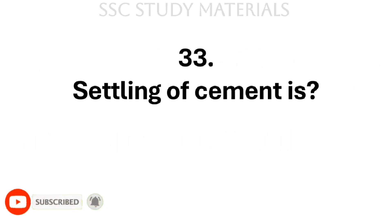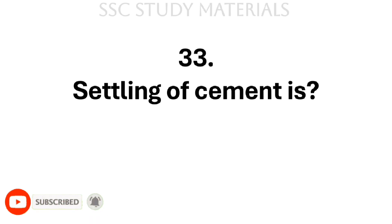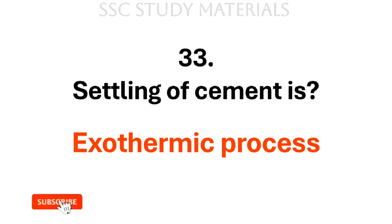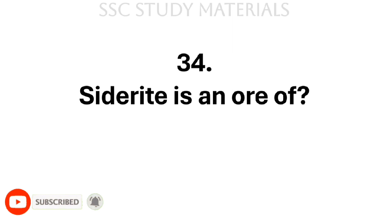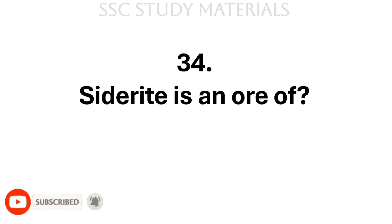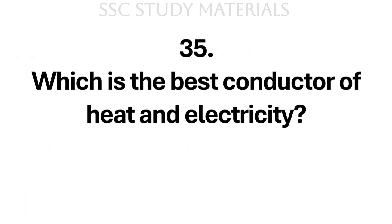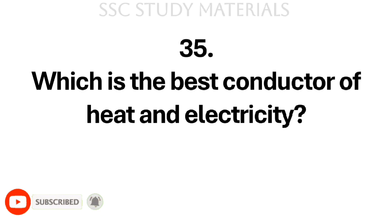Question No. 33: Settling of cement is? Answer: Exothermic process. Question No. 34: Siderite is an ore of? Answer: It is an ore of iron. Question No. 35: Which is the best conductor of heat and electricity? Answer: Silver is the best conductor of heat and electricity.